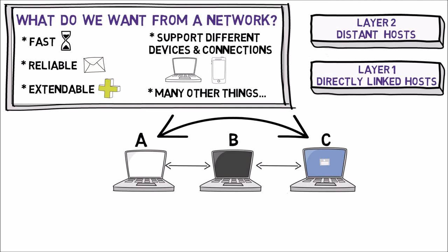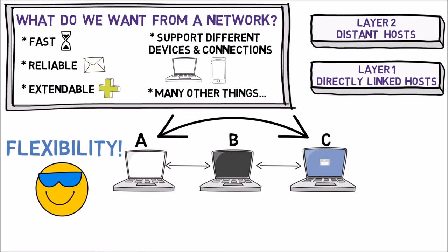What do we gain from this division? Flexibility. Each layer can be developed and implemented by different people. The upper layer doesn't care about the implementation of the lower layer, and vice versa. For instance, the connection between hosts A and B is a Wi-Fi connection, while the connection between hosts B and C consists of a carrier pigeon — completely different implementations of layer one. Developers of layer two don't need to bother themselves with this difference.